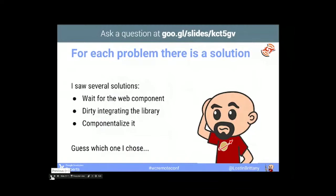I had in my head three solutions. The first one: wait for somebody to do the component. Maybe somebody had the same need and would do it for me. Not really. The second solution was integrating the library in a quick and dirty way. It will work, maybe it will be a hell to maintain, but it will work. And the third one was to create a web component around my library, to wrap it in a web component and use it in a component way, using the same attributes-in, events-out pattern that all the other components had, making it easy to integrate in any component application.